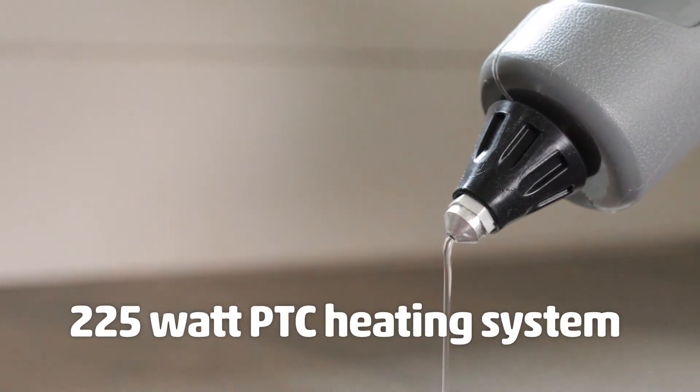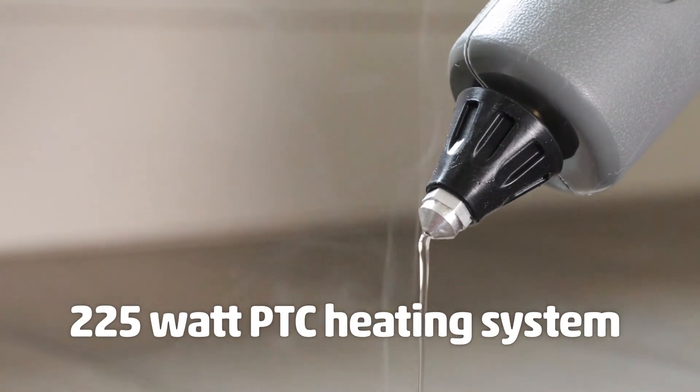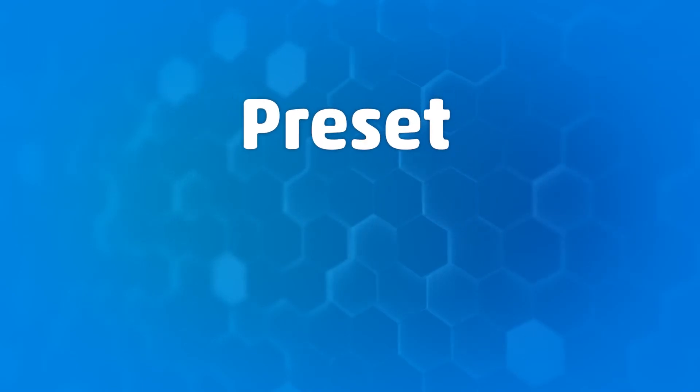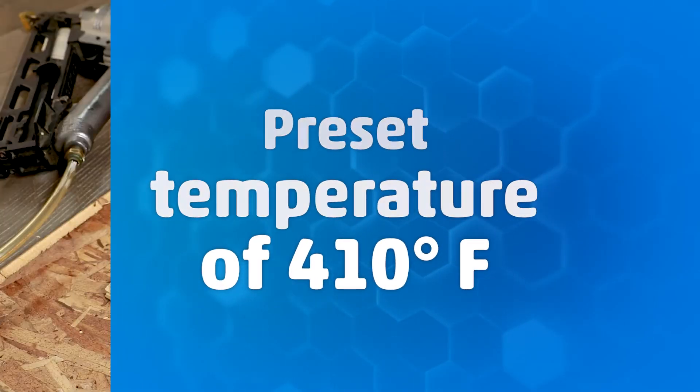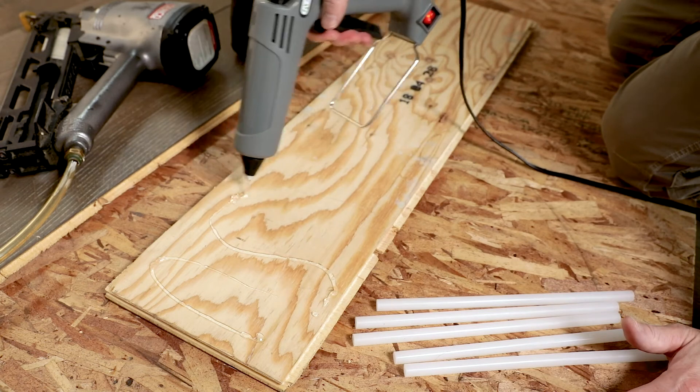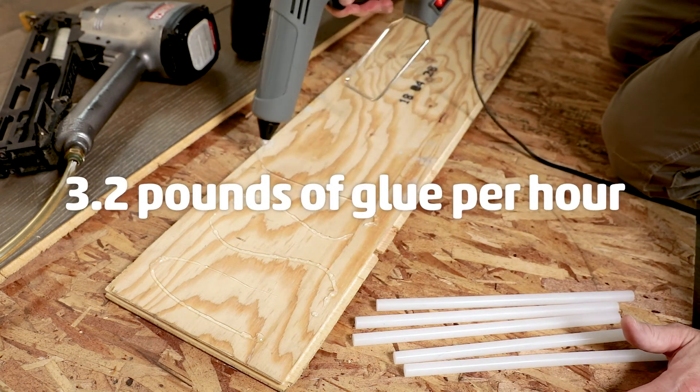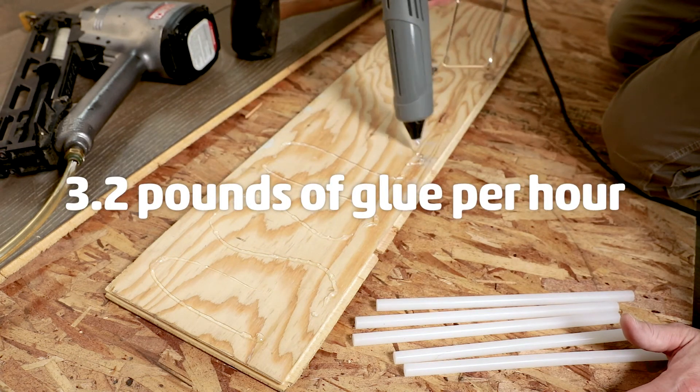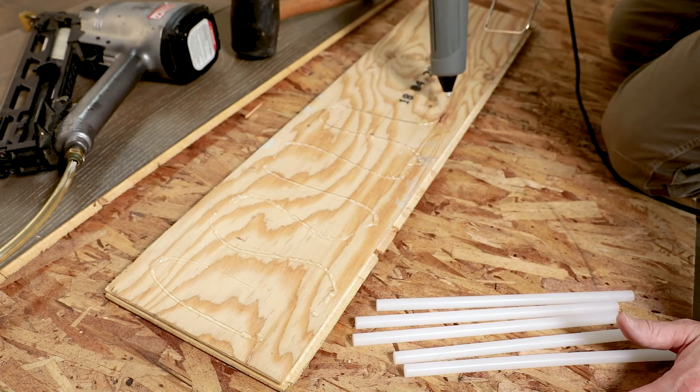The 225 watt PTC heating system provides quick heat up times to its preset temperature of 410 degrees Fahrenheit and has the ability to dispense 3.2 pounds of glue per hour using full-size half-inch glue sticks.